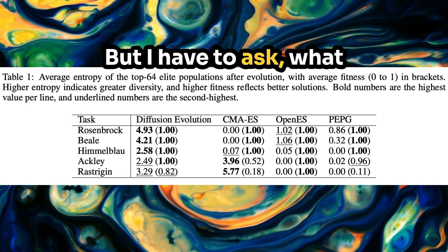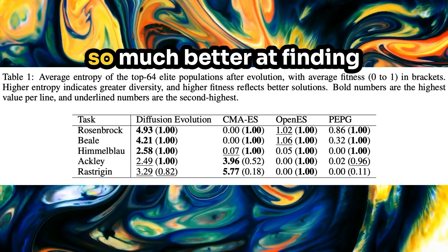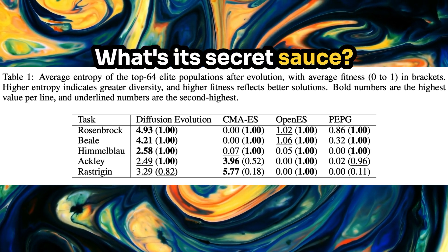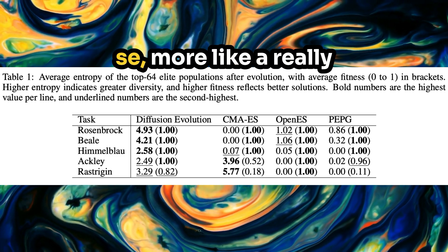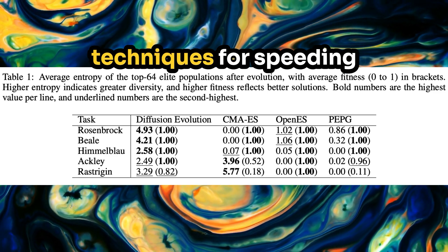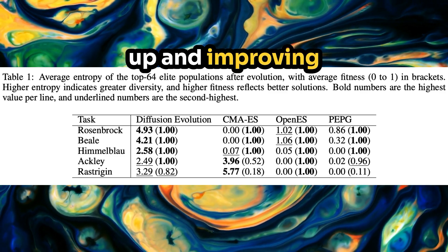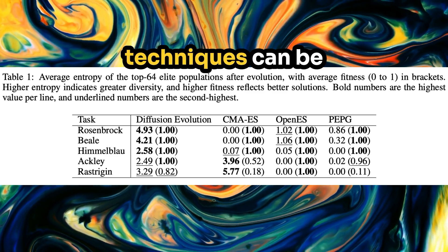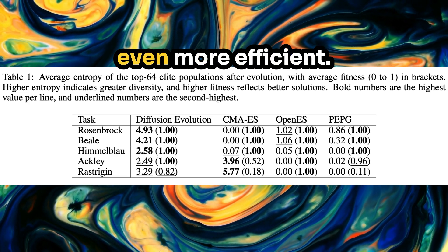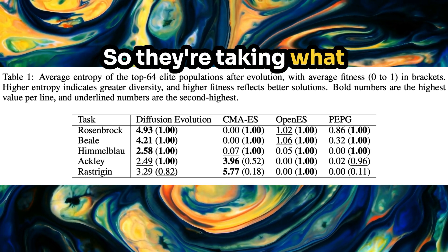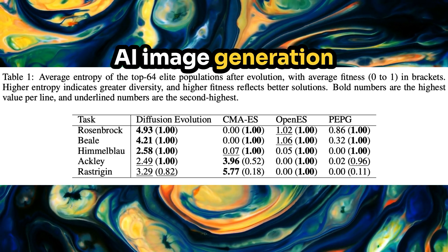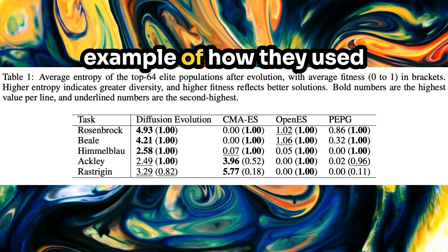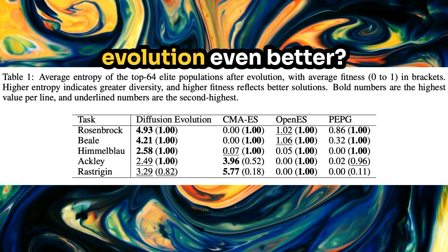What makes Diffusion Evolution so much better at finding these diverse solutions? It's more like a really clever strategy. Remember those techniques for speeding up and improving diffusion models, like accelerated sampling? Well, the authors found those same techniques can be applied to Diffusion Evolution, making it even more efficient — taking what already works well in AI image generation and using it to boost this new algorithm.